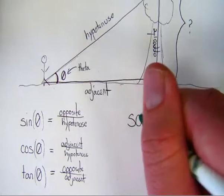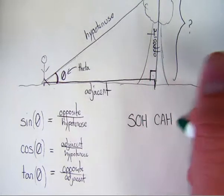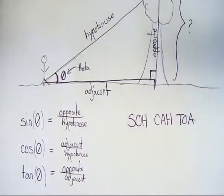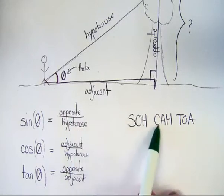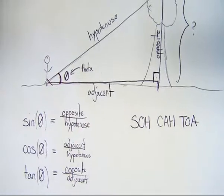Luckily, there's a nice little mnemonic to help you out with this. Think of this as being sort of a Native American type of name, SOHCAHTOA. If you can remember SOHCAHTOA, sine is opposite over hypotenuse, cosine is adjacent over hypotenuse, and tangent is opposite over adjacent.